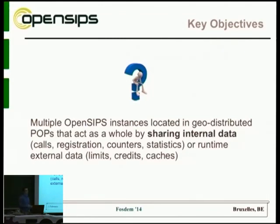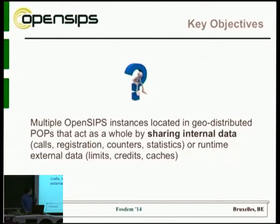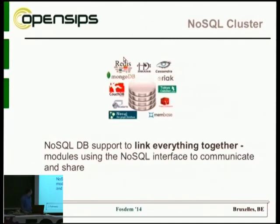First, we have internal info — stuff related to the actual SIP protocol, like ongoing calls and registrations. Secondly, there is runtime information that helps while routing your users' calls, like whether the user has enough credit for you to accept the call, or whether the user has exhausted the number of concurrent channels allocated to them. There is a very big need to share all kinds of data in a geo-distributed way, and we decided to use various NoSQL engines in order to link everything together.